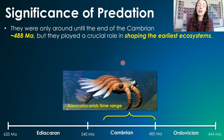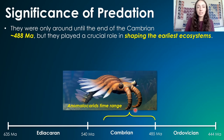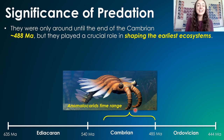They were only around until the end of the Cambrian, around 488 to 485 million years ago. And given that they evolved around 515 million years ago, this didn't give them much time compared to other organisms like trilobites that lived for 300 million years to rule the seas.